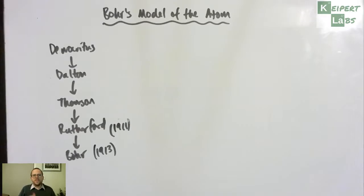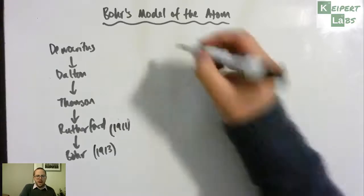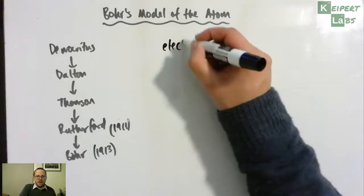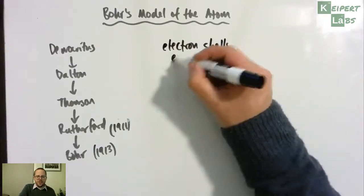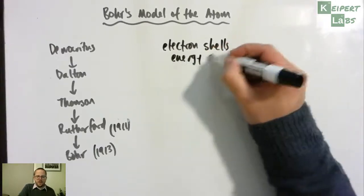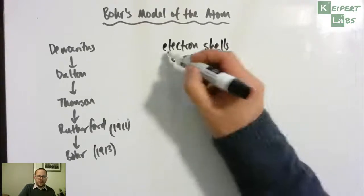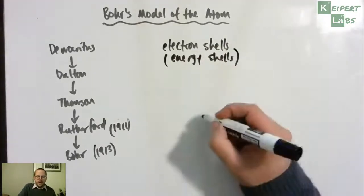So Bohr then made a slight tweak to Rutherford's model of the atom, and he proposed the existence of electron shells or energy shells.